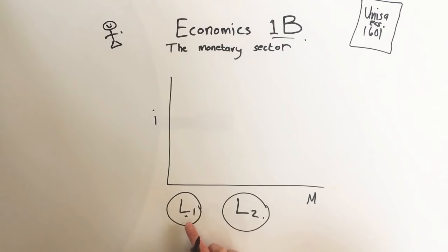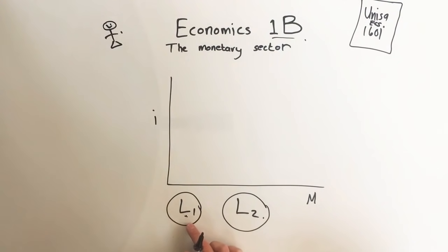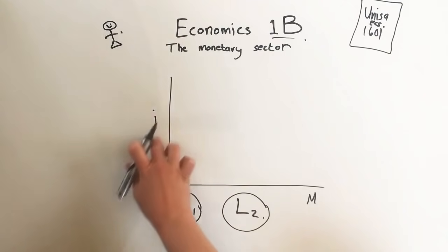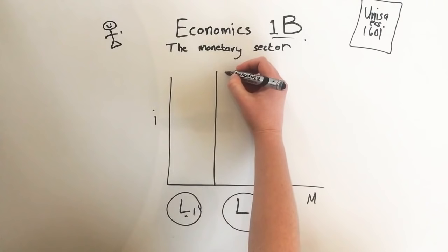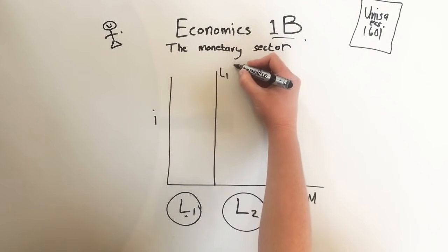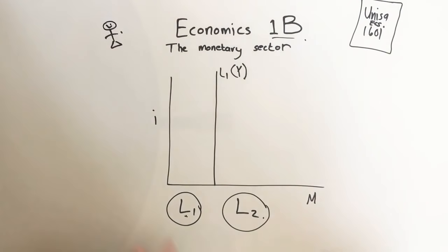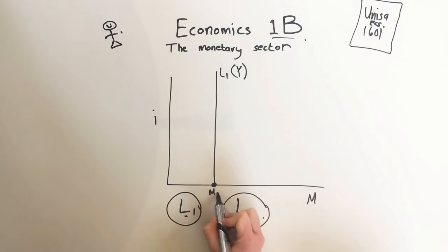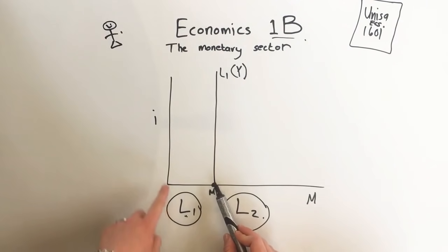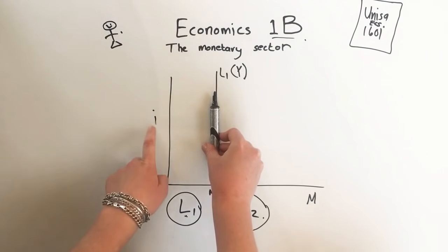The active balance L1 does not depend on the interest rate — it depends on income level Y. Because the first demand for money is not related to the interest rate at all, it's just a straight vertical line showing the demand for L1. Whether the interest rate goes up or down, this point M1 will not change. This line stays right here and has nothing to do with the interest rate.